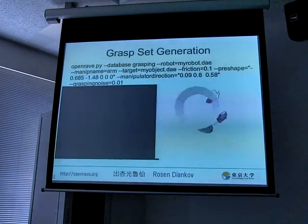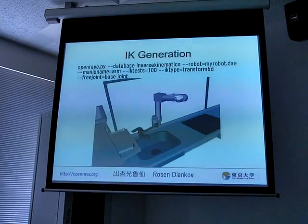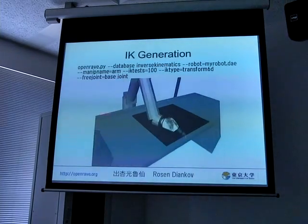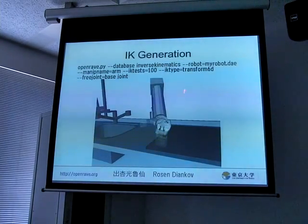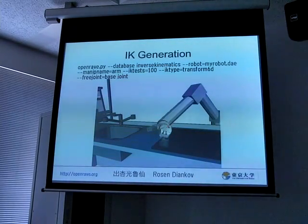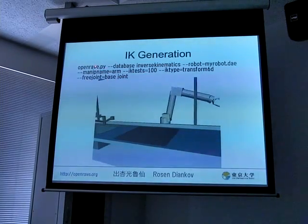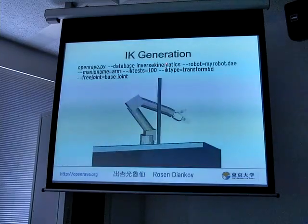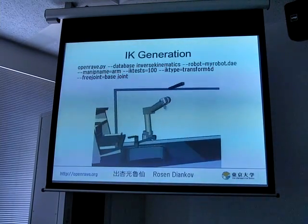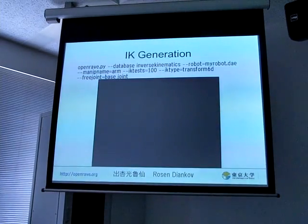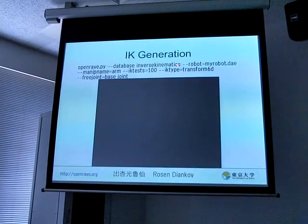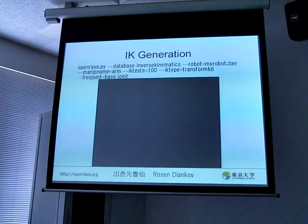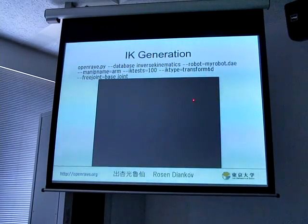Here is what the IK generation looks like when you use OpenRAVE. This robot currently has seven joints, including one translational joint, and the IK allows you to explore all the free space given a particular hand location. You would call the OpenRAVE Python program with the database inverse kinematics option. You specify your robot, which manipulator you want, and whether you want the torso in that chain. You specify the IK type — transform6D in this case — and because it is 6D with seven joints, you have a free joint, which you specify as well. And then you get a generated C++ file.